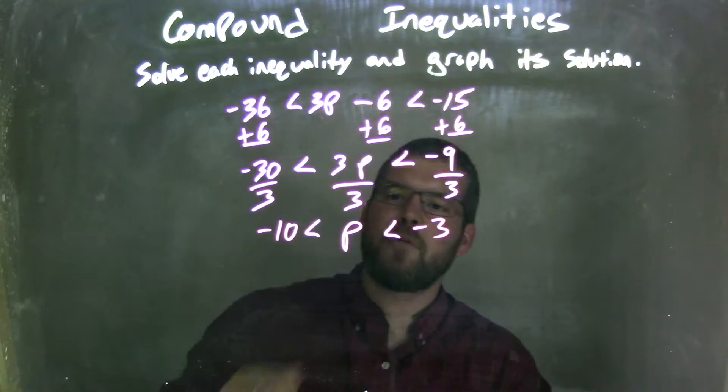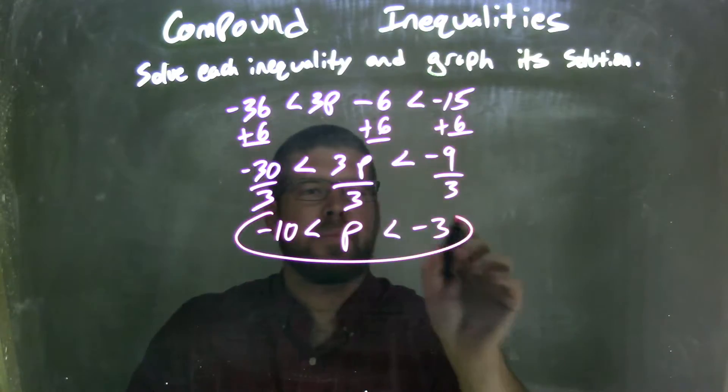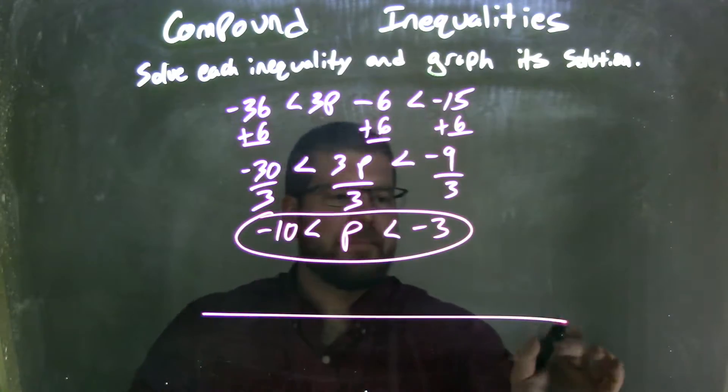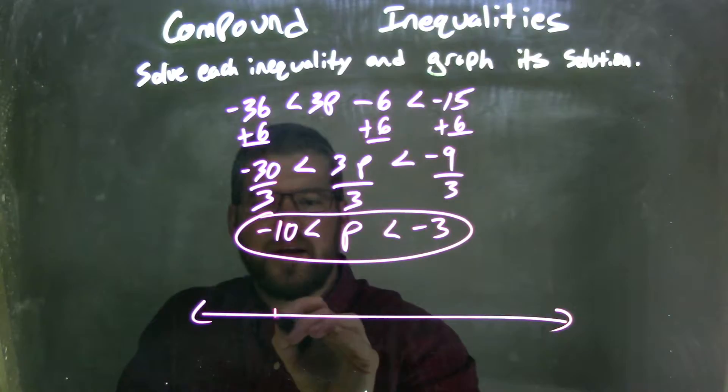And there we have it. We have our final inequality, negative 10 is less than p, which is less than negative 3. So now we need to graph that. In graphing that, let's start here, let's put negative 10 right there.